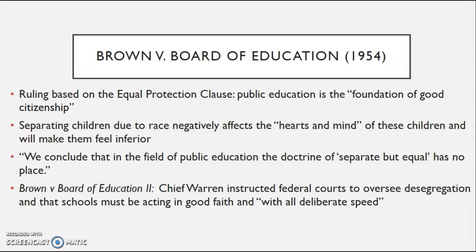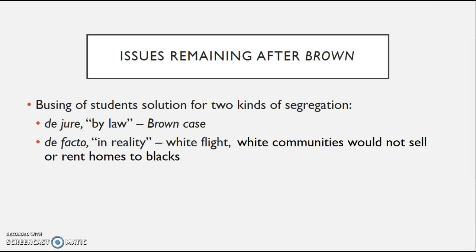There is actually a second Brown v. Board of Education case arguing about the importance of desegregating schools 'with all deliberate speed,' which was important in pushing the South to speed up desegregation. Some issues remained after Brown — bussing in particular was controversial. You can outlaw segregation by law, known as de jure, but the de facto reality is that whites found ways to sidestep the ruling through 'white flight' — leaving city areas — or white communities refusing to sell or rent homes to Black families. So segregation continued to exist in practice even after it was illegal.